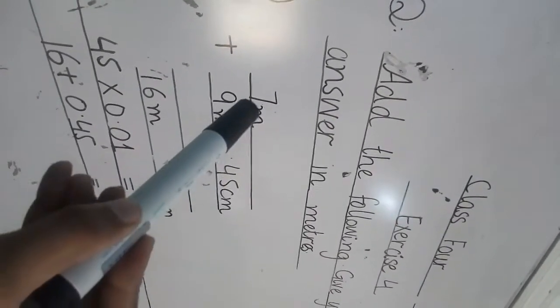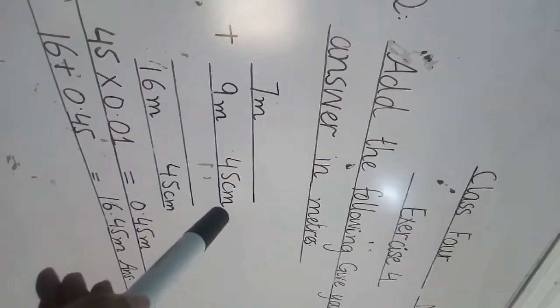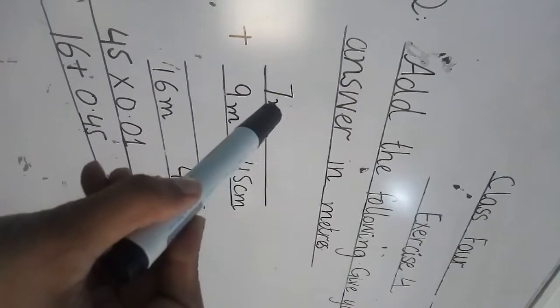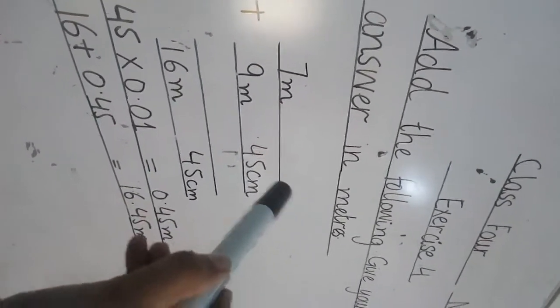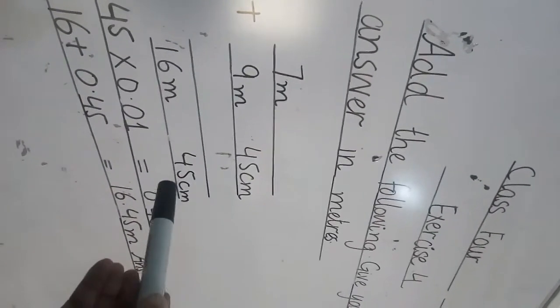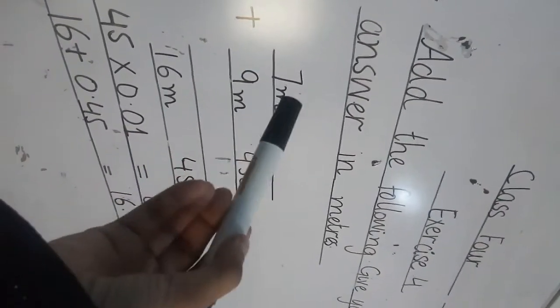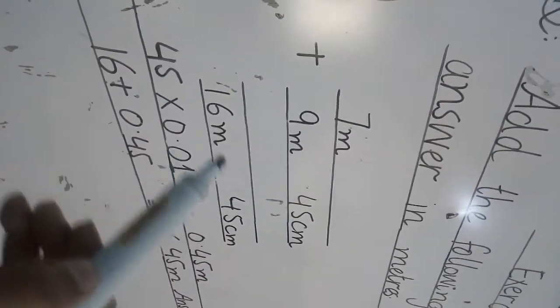As you see, we will write 7 meter plus 9 meter and 45 centimeter. Because there is no centimeter with 7 meter, so you will leave it vacant. By adding them, we get 45 centimeter will come as it is, and when we will add this 9 and 7, we get 16 meter. So our answer is 16 meter 45 centimeter.